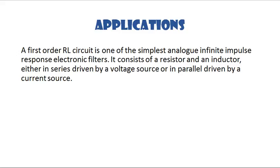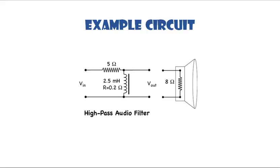A first-order RL circuit is one of the simplest analog infinite impulse response electronic filters. It consists of a resistor and inductor either in series driven by a voltage source, or in parallel driven by a current source. This is an example circuit.